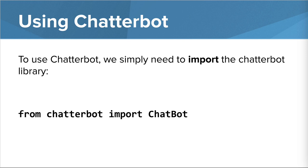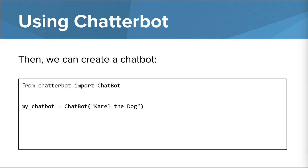To use ChatterBot, we simply need to import the ChatterBot library at the top of our program by writing: from ChatterBot, import Chatbot. Then we create a chatbot object and pass it the subject the chatbot is relating to. Here, this chatbot will be about Carol the dog. I'm storing this chatbot in a variable called MyChatbot, which I can use to refer to this chatbot later in my program.